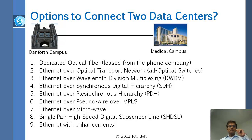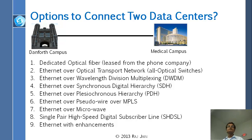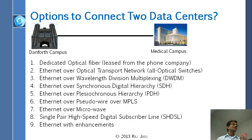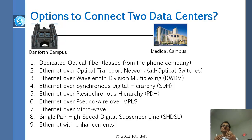So, nine options are listed here if you wanted to connect two campuses. One is that you get optical fiber. Obviously, you cannot dig the street and put optical fiber there, so you have to get it from the telephone company, which is another name for the carrier. And it's very expensive. So what you do is say, well, I don't want a full fiber — give me a piece of the fiber, which means one wavelength.